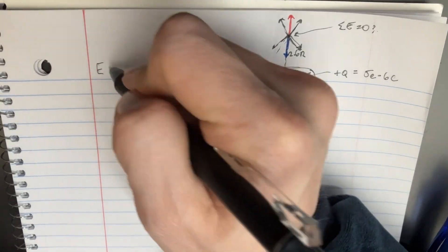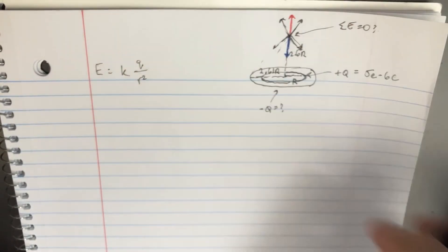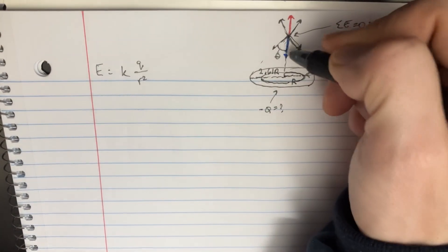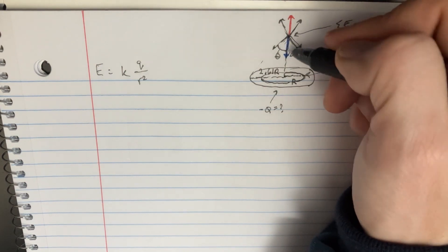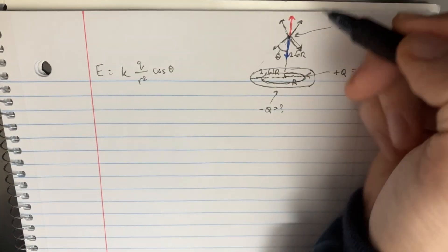So we can start looking at the equation of k q over r squared, and then we would think, okay, if we had an angle here of theta, then it would be the adjacent side, and so that would be cosine.